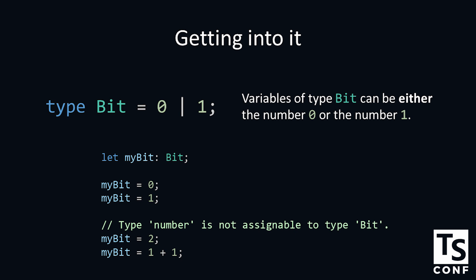The original title for this talk until we learned that formatting is really hard with that. Here we're declaring that variables of type bit can be either the number 0 or the number 1. Let my bit — similar to before — can be a 0 or a 1. The type number is not assignable to bit because a number could be 2, it could be 0.5, negative 3, infinity. That's not allowed. So my bit is only ever 0 or 1.